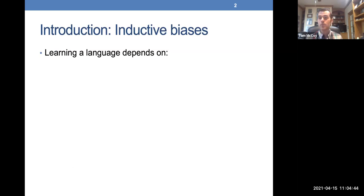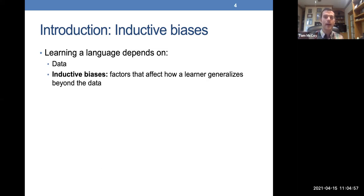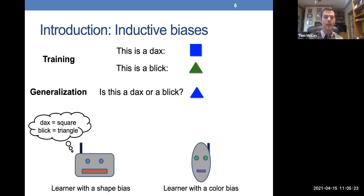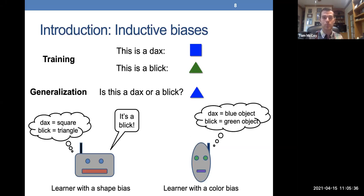Learning a language, whether done by a human or a model, depends on two factors. It obviously depends on data in that language. But less obviously, it also depends on the learner's inductive biases — the factors that affect how the learner will generalize beyond the data. For example, two learners told that a blue square is a DAX and a green triangle is a blick will disagree on whether a blue triangle is a DAX or blick depending on whether they generalize by shape or color.